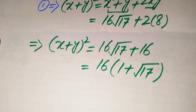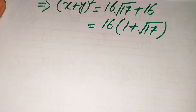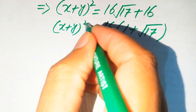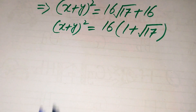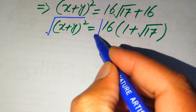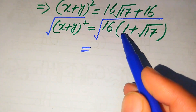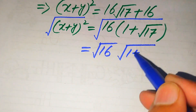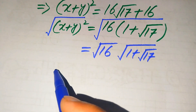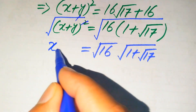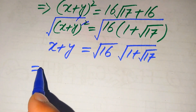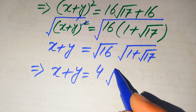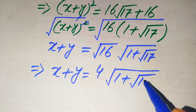To find x + y, we take the square root of both sides again. Applying the square root separately on the right-hand side: √16 · √(1 + √17) = 4√(1 + √17). On the left-hand side the square and square root cancel, giving x + y = 4√(1 + √17).